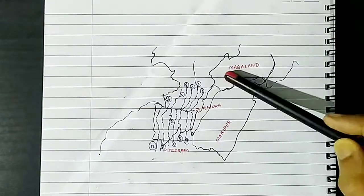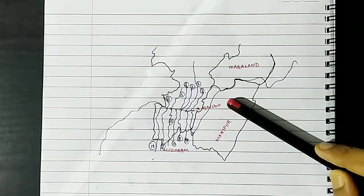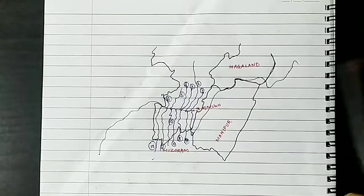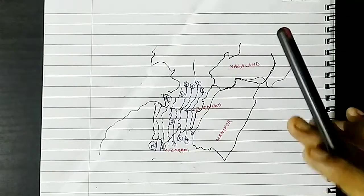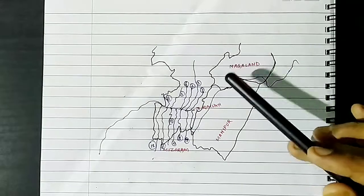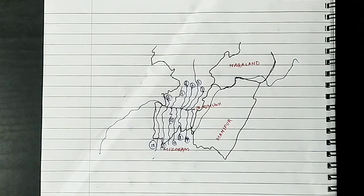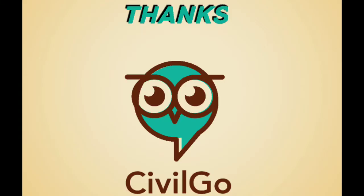This was all about the tributaries of the major rivers of Assam — the Brahmaputra and the Barak systems. More details will be covered in the next class. Thanks for watching.